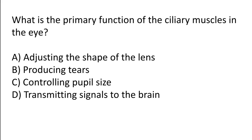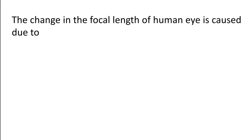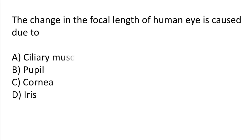What is the primary function of the ciliary muscles in the eye? Adjusting the shape of the lens, producing tears, controlling pupil size, or transmitting signals to the brain. The correct answer is option A — the primary function of the ciliary muscles in the eye is adjusting the shape of the lens.